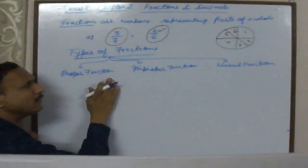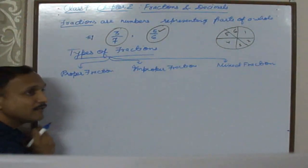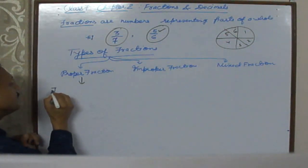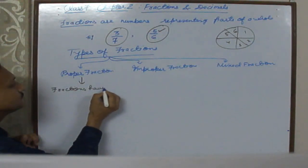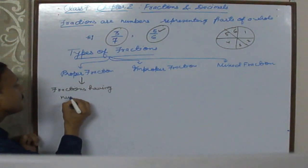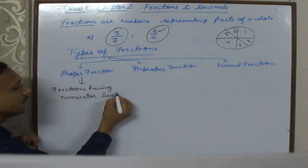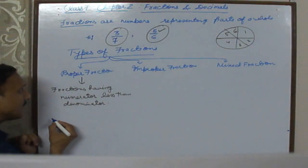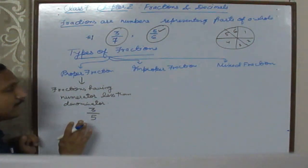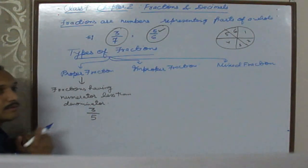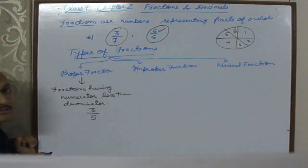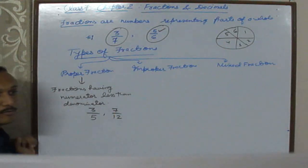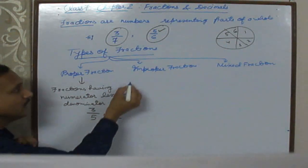Now we will study types of fractions. The first type is proper fraction. A proper fraction is one having numerator less than denominator. For example, 3 by 5 is a proper fraction because the numerator 3 is less than the denominator 5. Another example is 7 by 12. Such fractions are called proper fractions.